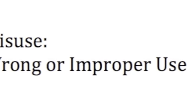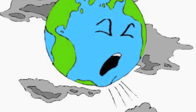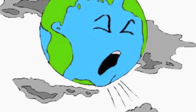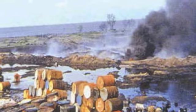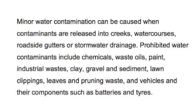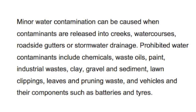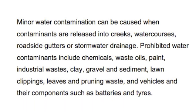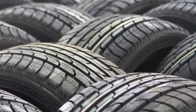Now we're ready to talk about the misuse of water. The misuse of water can basically be defined as the wrong or improper use of our valuable resource needed to survive. A key example of the misuse of water is pollution due to arsenic, mercury, radioactive materials, chemical wastes and sewage. According to the Queensland Government, prohibited water contaminants include chemicals, waste oils, paint, industrial wastes, clay, gravel and sediment, lawn clippings, leaves, pruning waste, and vehicles and their components such as batteries or tyres. By keeping all of these things out of our water sources, we can try to sustain our resource and use water for better purposes.